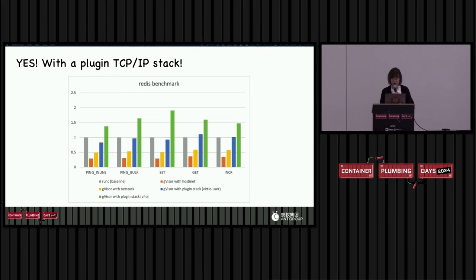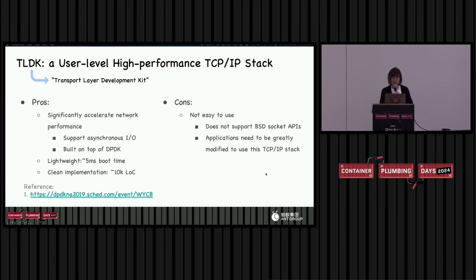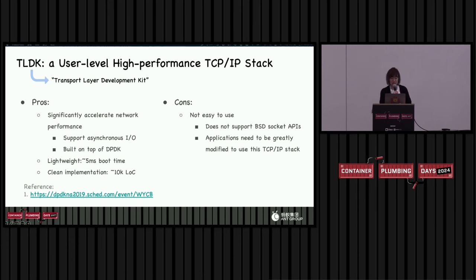Before we go into the implementation, let's introduce the TCP/IP stack we chose, which is called TelDK. TelDK is a user-level high-performance TCP/IP stack and an open-source project held by the FDIO organization. It has many advantages: it can significantly accelerate network performance since it supports asynchronous I/O and is built on top of DPDK. It is also lightweight with a small and clean implementation in C. However, it has one big disadvantage: TelDK does not support BSD socket APIs, so applications that need to use TelDK must be greatly modified. This disadvantage can be avoided after we plug TelDK in as a network stack to GVisor.